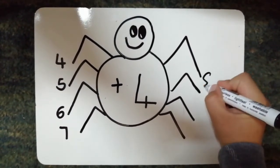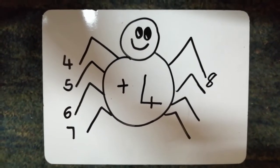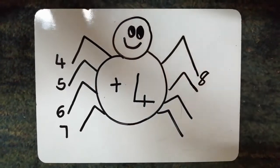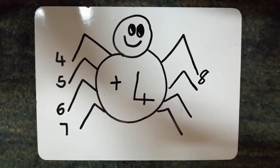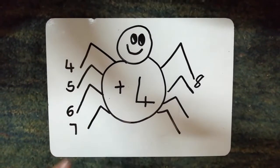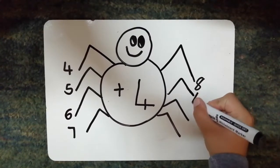Number five. Five plus four. Five in your brain and four fingers. Six, seven, eight, nine. Nine over here.